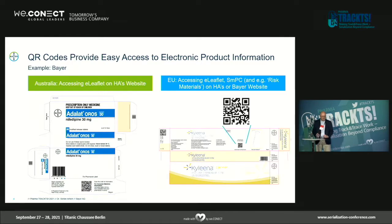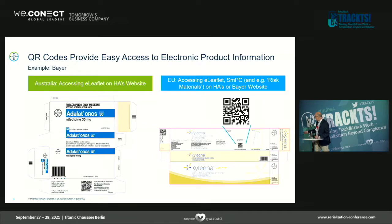In addition to the paper leaflet, there is a QR code at the bottom to access the authority's website and the patient information leaflet in electronic PDF format. We have this as well in the EU for a product family where, in addition to the data matrix code for EU FMD serialization, there is also a QR code that links to the company or authorities' website.